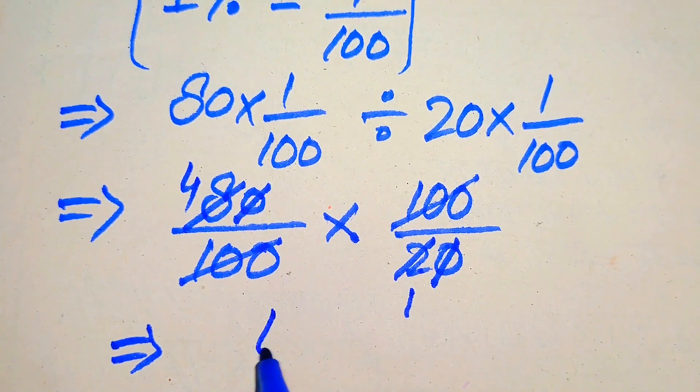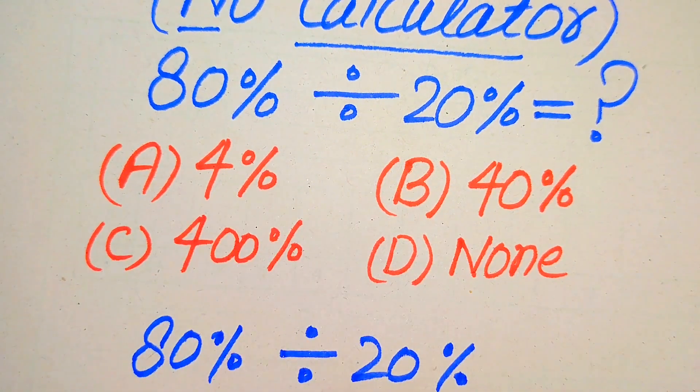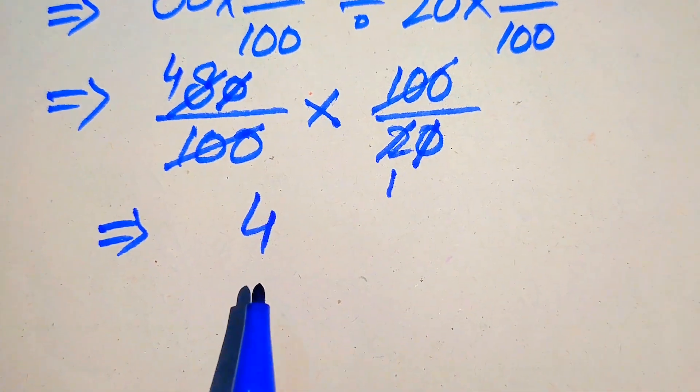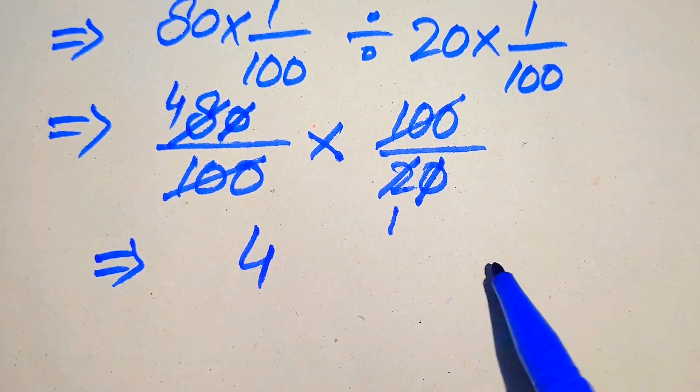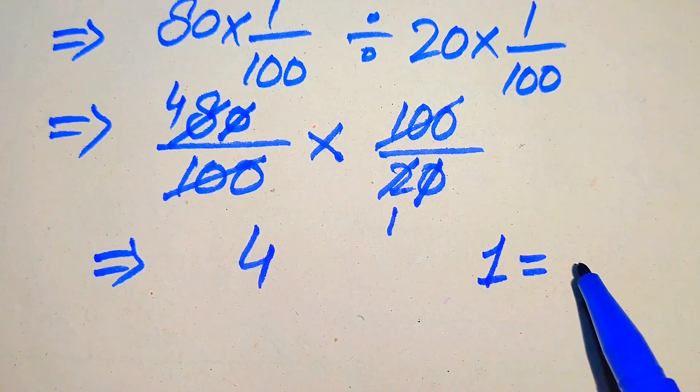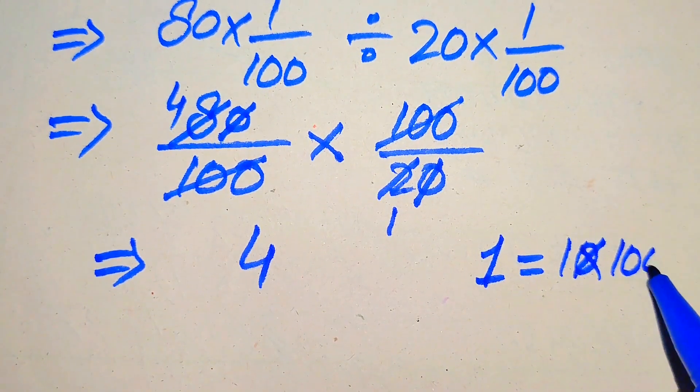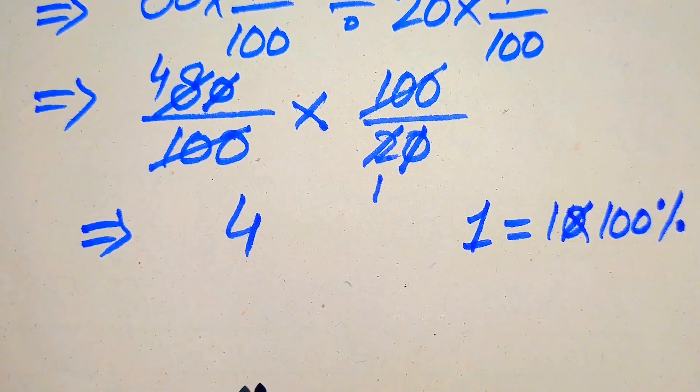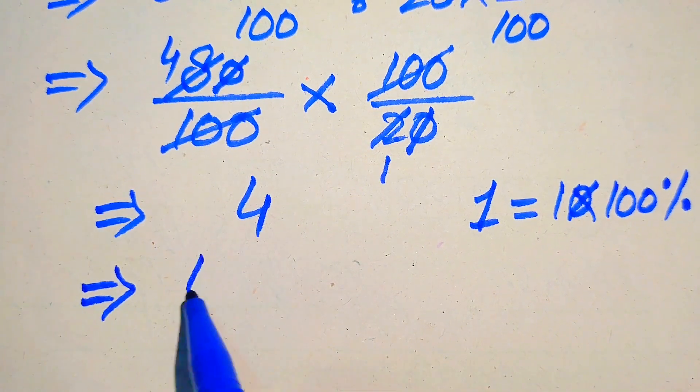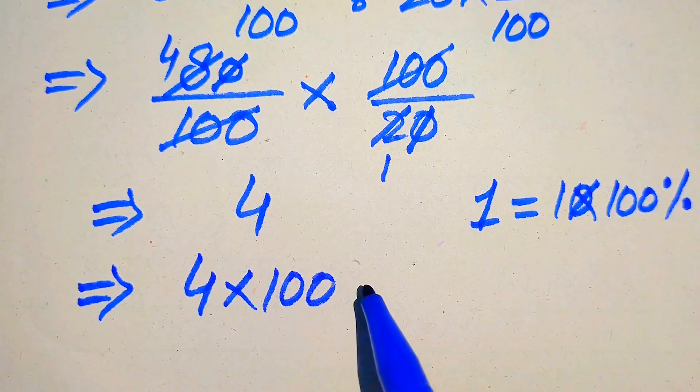After simplifications, we get only 4. But if you focus on the options of this question, you see all of the options involve percentage signs. Now we need to make the percentage sign. You know that to convert 1 into percentage form, you multiply it with 100. So we multiply this 4 with 100, and this 4 becomes percentage form.